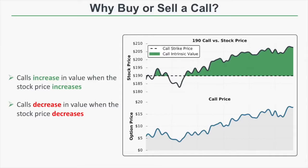Why does the call option have any value when the stock price is trading below the strike price of 190? No one's going to exercise the call at $190 when shares are trading at $185 in the open market. The answer is that if there are 30 days left until expiration, there's still time for the stock price to increase and for the call price to increase. When an option is out of the money — meaning the call strike price is above the current stock price — it might not be worthless because there's still time for that option to become valuable before it expires.